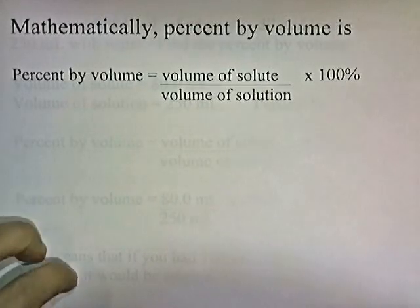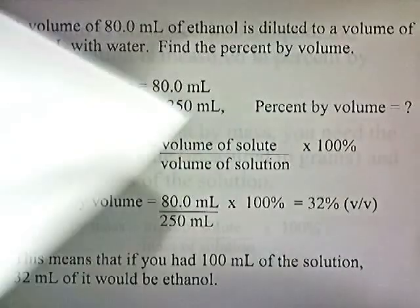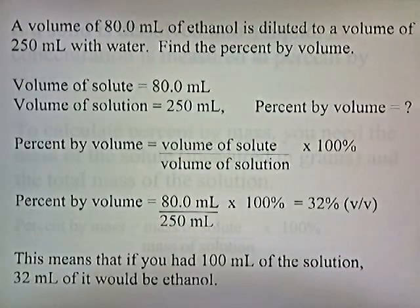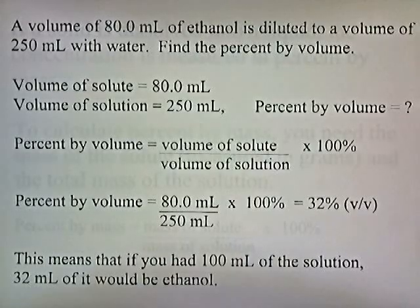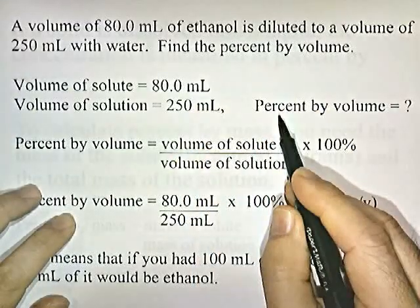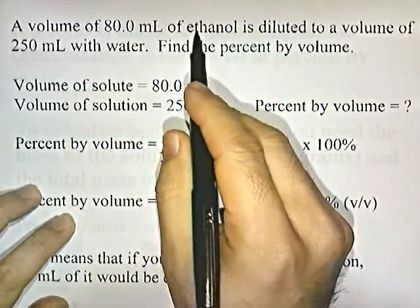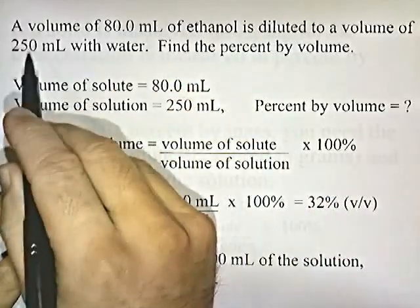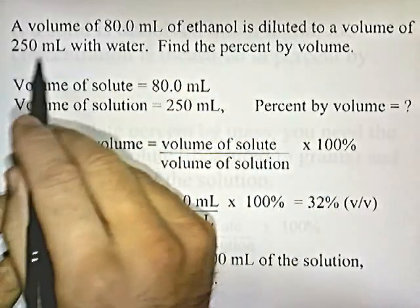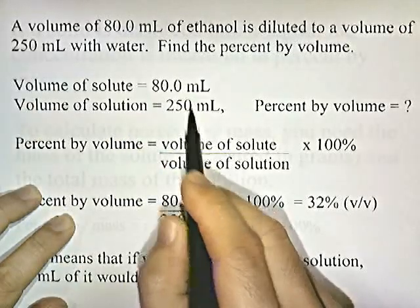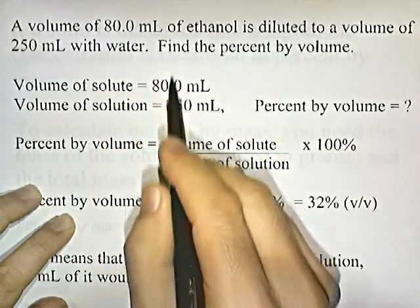Let's try a problem using this formula. A volume of 80 milliliters of ethanol is diluted to a volume of 250 milliliters with water. Find the percent by volume. The total volume of the solution is 250 milliliters, and the volume of the ethanol — the solute — is 80 milliliters.